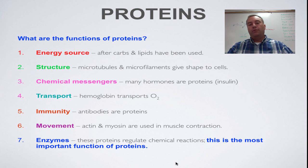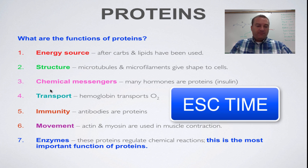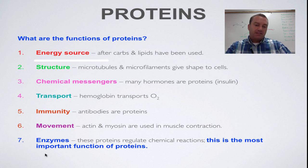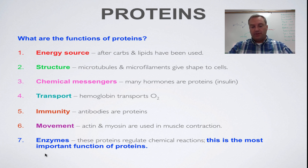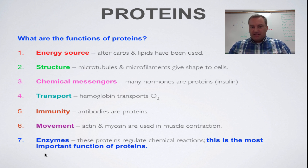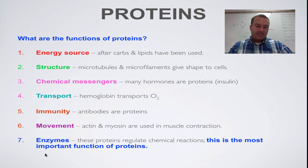Finally in this episode, we're going to go over the seven functions of a protein. I've got a great way to remember this — just remember the first letters of each function listed on the screen, and the mnemonic is escape time. The E in escape stands for energy source. Your body uses proteins as its third choice for energy — first carbohydrates, then lipids (body fat), and once those are gone it breaks down proteins. When you reach the protein level, that means you're dealing with starvation, and you literally get that skin-and-bones look. The S stands for structure.